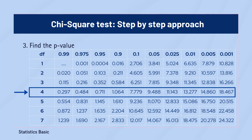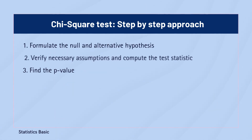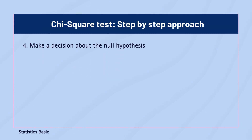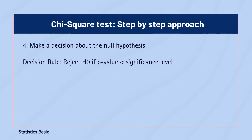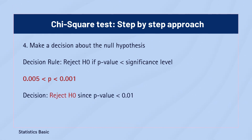The p-value corresponding to the chi-square statistic of 17.60 lies between 0.001 and 0.005. In the fourth step, the p-value approach is used to make a decision about the null hypothesis. A small p-value less than the significance level suggests rejecting the null hypothesis, while a large p-value greater than the significance level suggests failing to reject it. In this case, the p-value is less than 0.01, which suggests rejecting the null hypothesis.